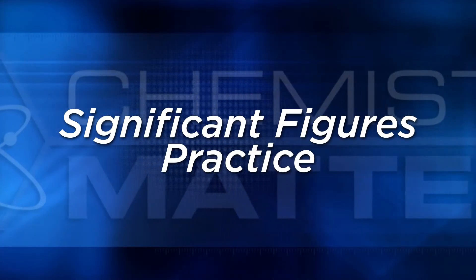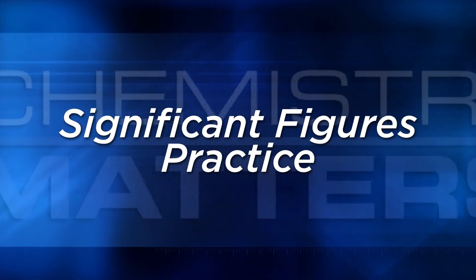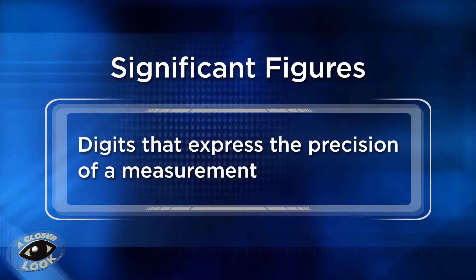In this Closer Look, we'll be learning about significant figures. Significant figures, which all scientists use so that they can interpret each other's data correctly, are digits that indicate the precision of a measurement.